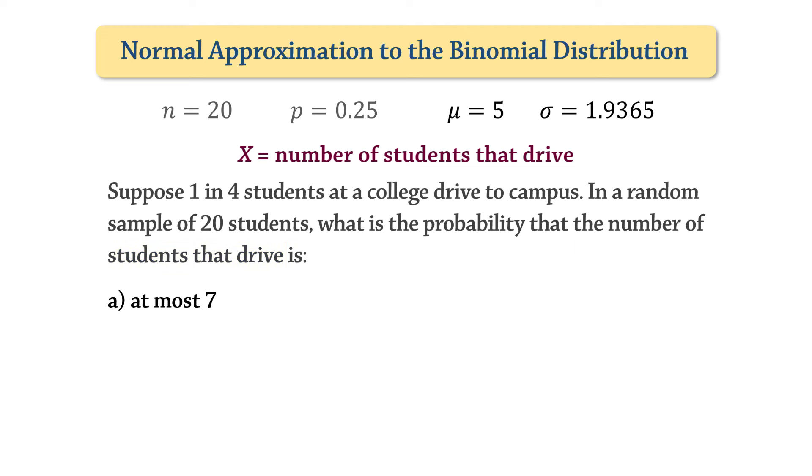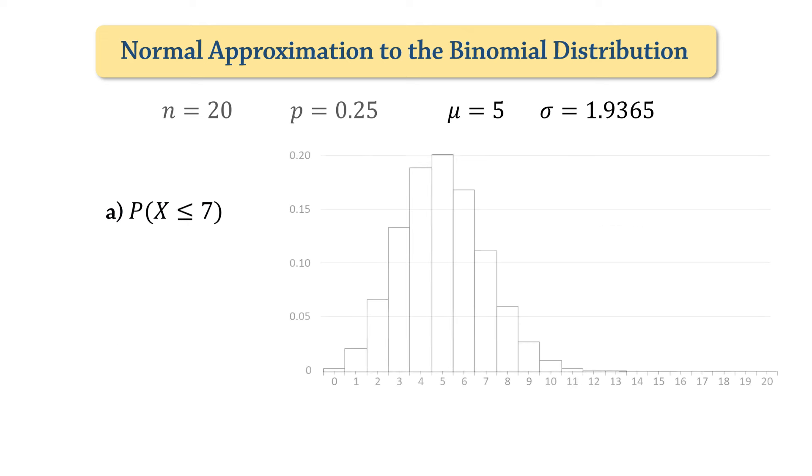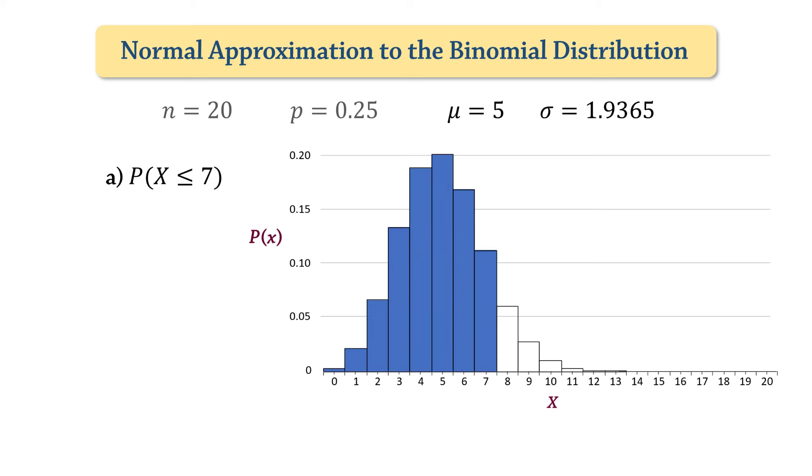For part a, we want the probability that at most 7 students drive, that is, p of x is less or equal to 7. Here is a histogram of this binomial distribution with the bars satisfying x less or equal to 7 shaded. Using the binomial distribution formula or software, we can calculate the precise probability, which will be equal to the total area of these shaded bars. But because we're using the normal approximation, we will be applying continuity correction.